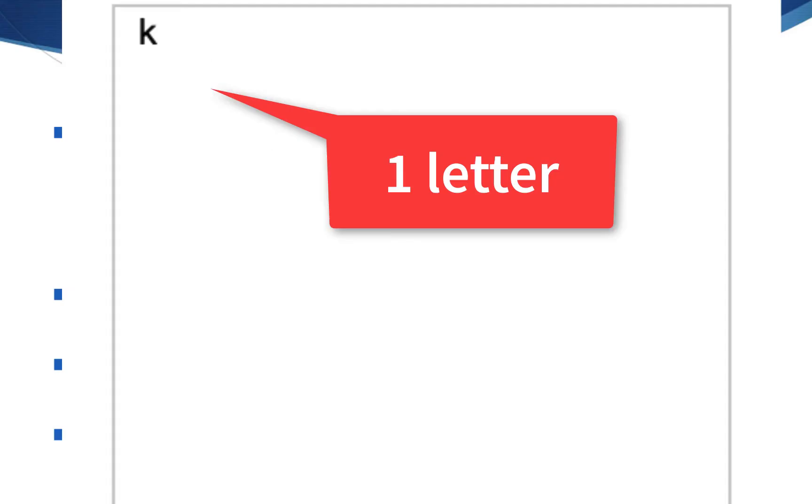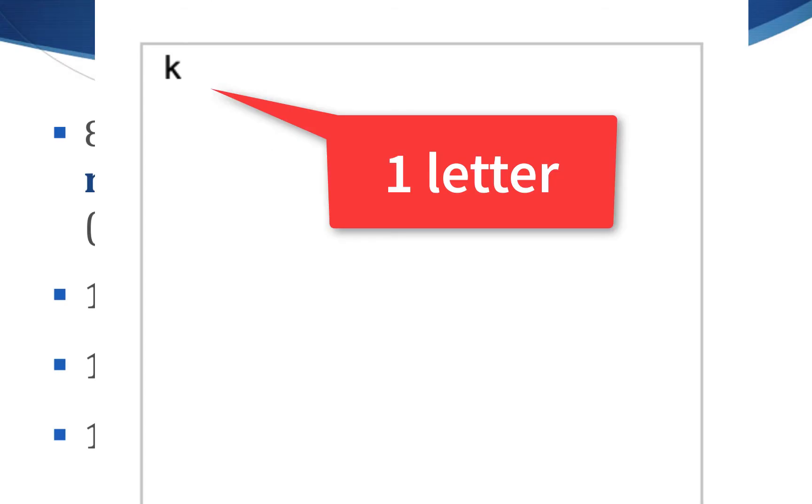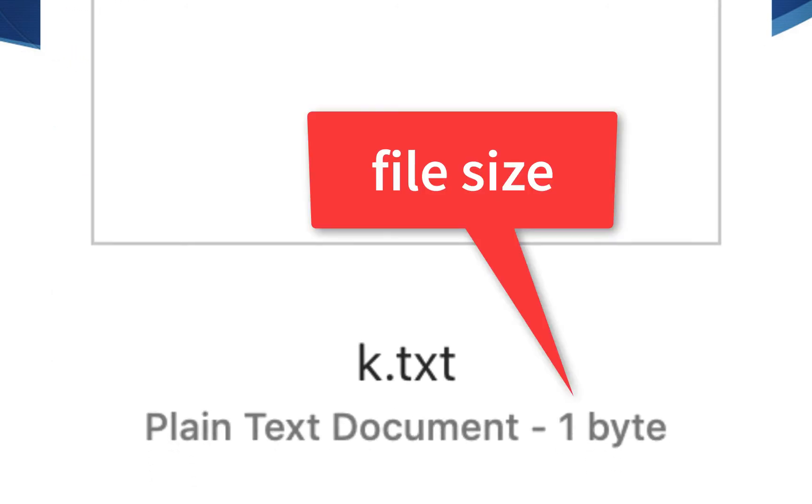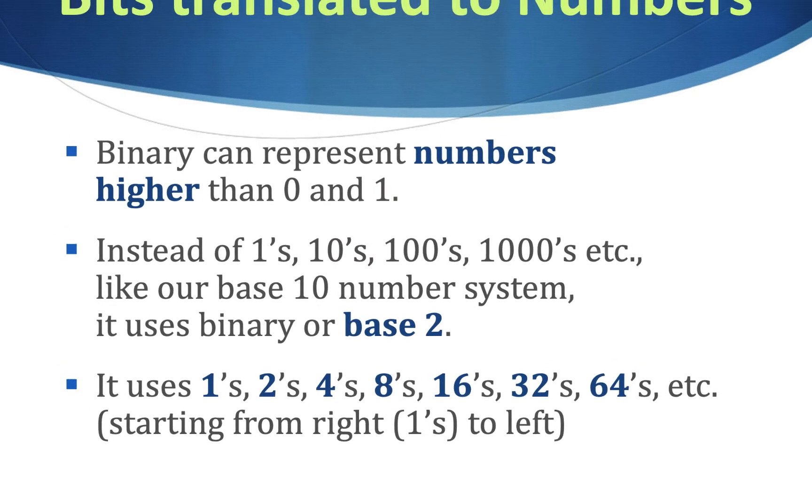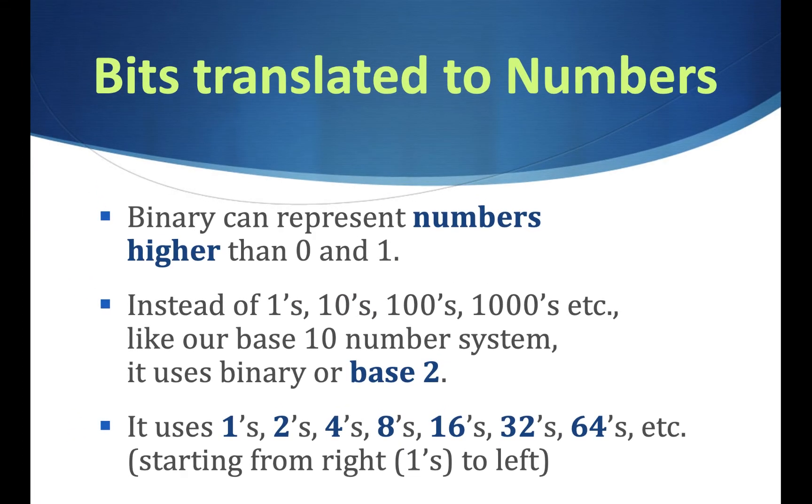Now, if you typed a letter on a computer, you went into Word and you typed the letter K, and you saved it as a text file, the size of that file would basically be 1 byte. That's what it converts to. It's 8-bit. It would be 1 byte. We can translate these to numbers so we can understand them, so we know how big our hard drive is. We're not going to look at a hard drive and say, oh, it's 0, 0, 1, 1, 1, 1, 1, 1, things like that. We can't read in 1s and 0s. We don't do that. Computers do, but we don't.